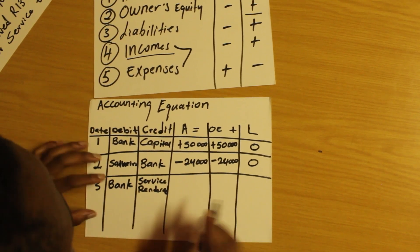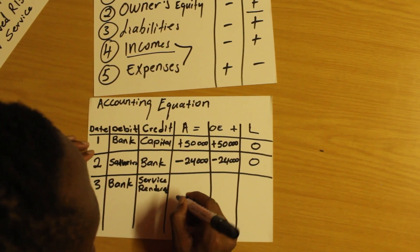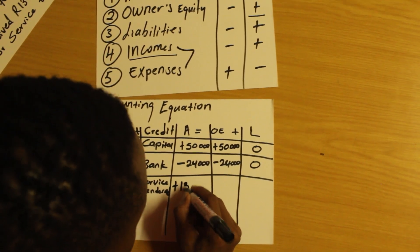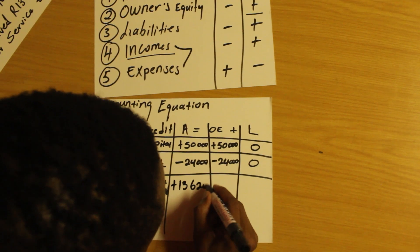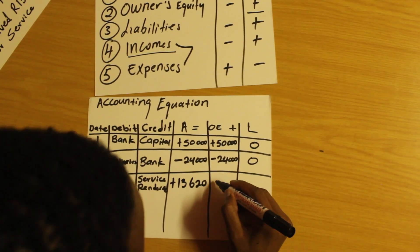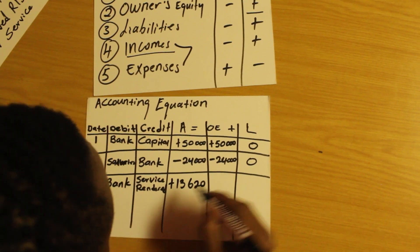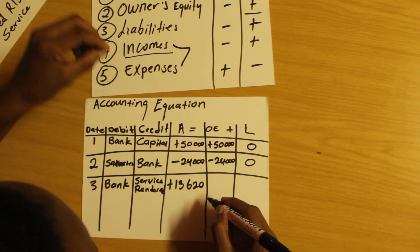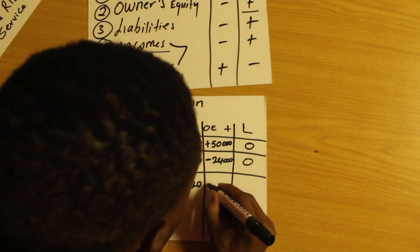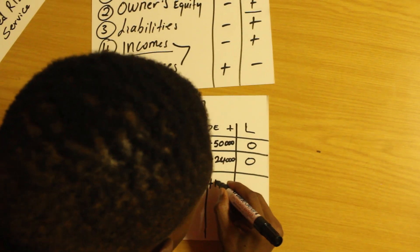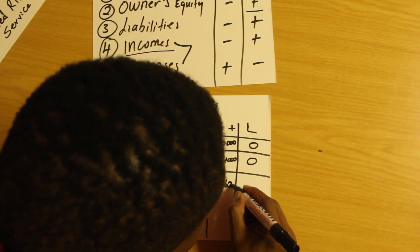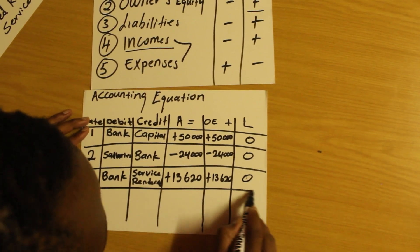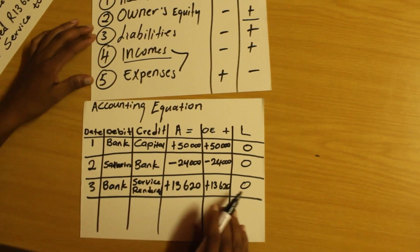I'm going to say plus 13,620 on the bank side. Service rendered is an income, and incomes increase our owner's equity, so I'll go to the owner's equity and say plus 13,620. Those are the only transactions I wanted us to do for today. Thank you.